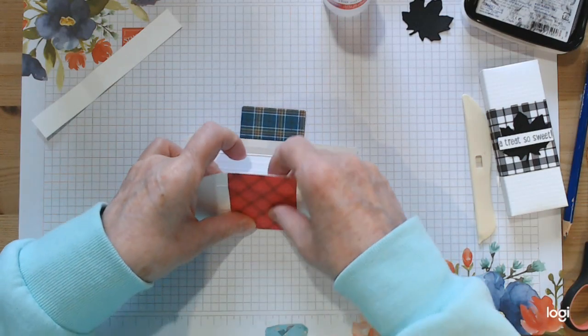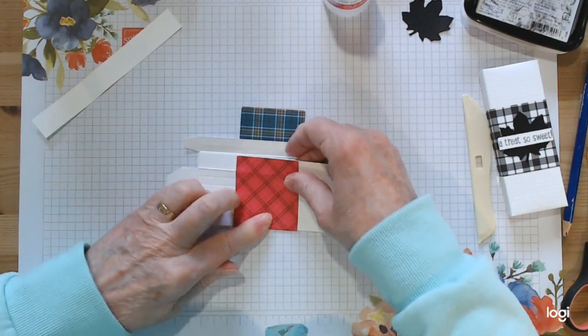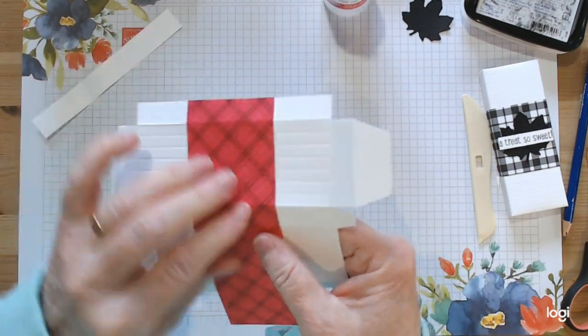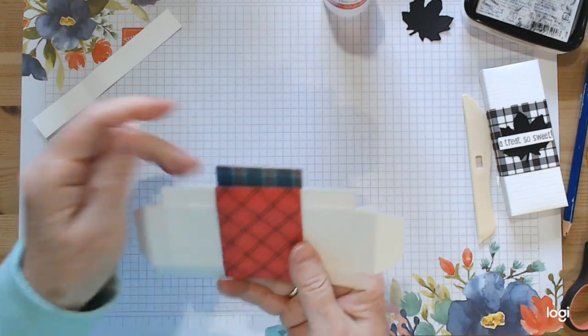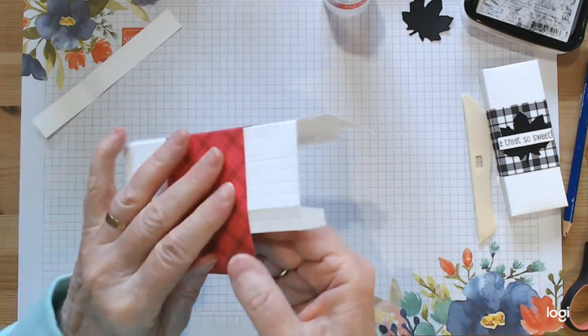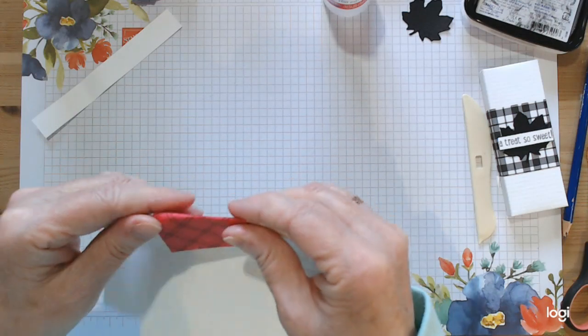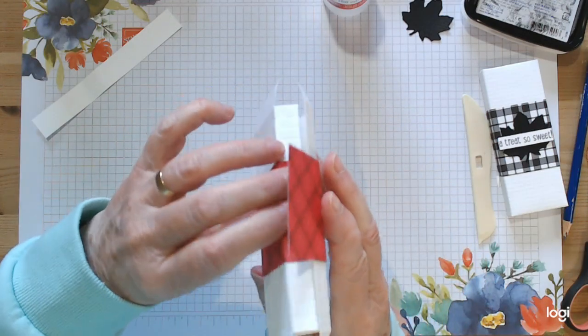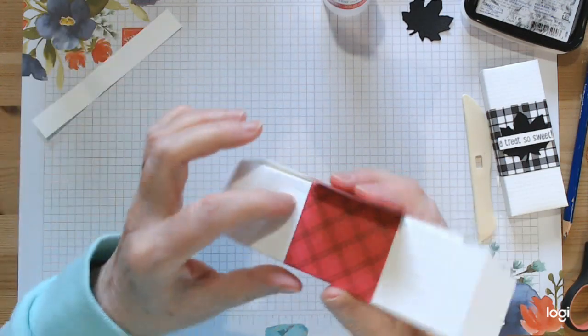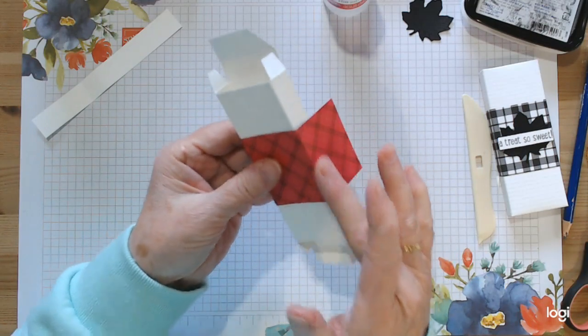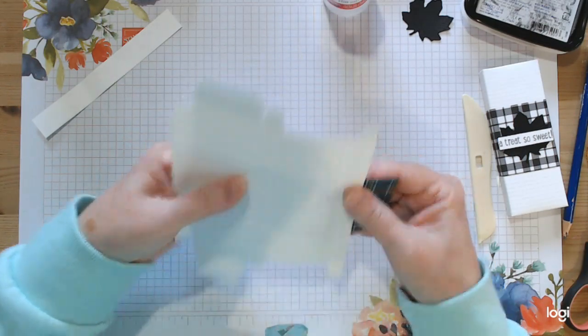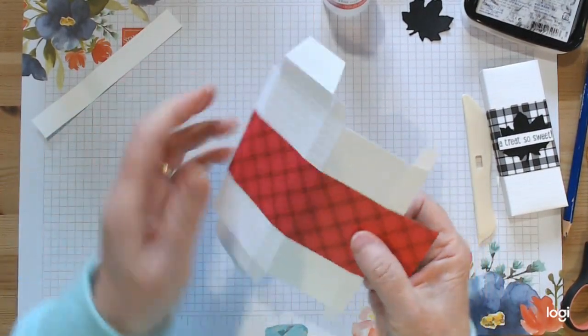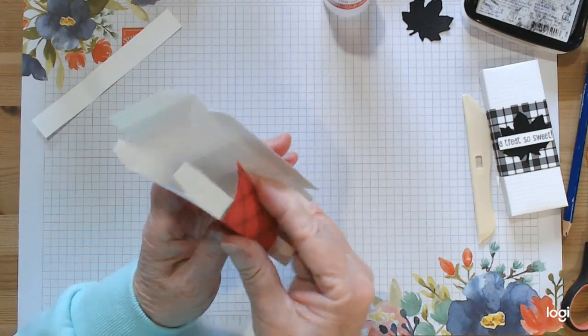Press it down gently but start at this side, keeping that lined up there so it's not over the edge, and do your fold. Smooth it as you go along to the next fold. You want to keep it up close to that edge.